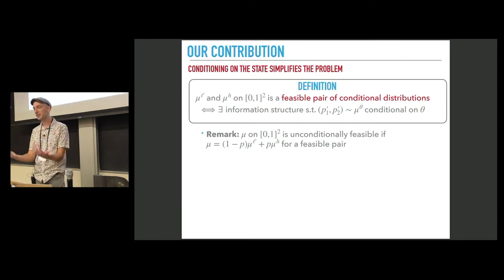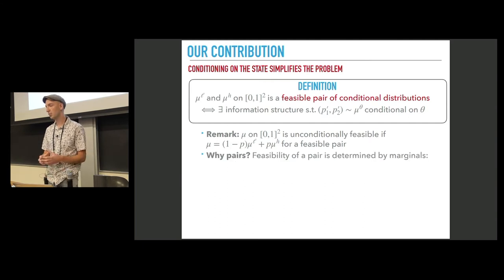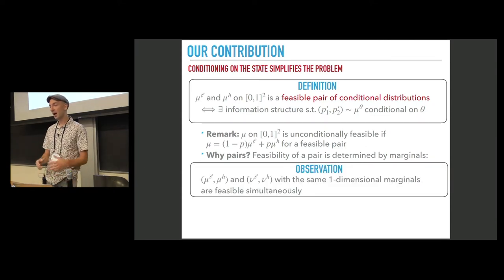So what is the simplification that we achieve? Why pairs simplify the problem? It turns out that feasibility of a pair is determined by its marginals. Namely, if we consider two pairs mu L and mu H and mu L tilde and mu H tilde that have the same one-dimensional marginals.